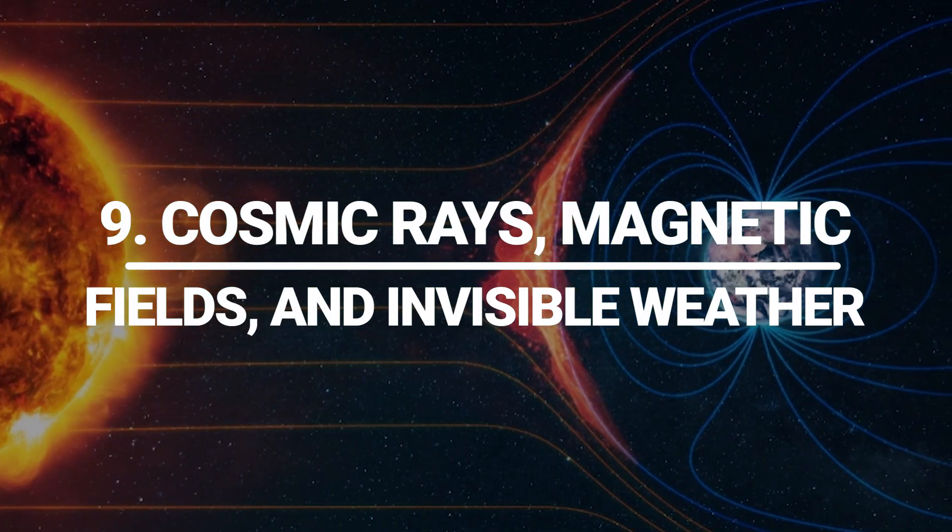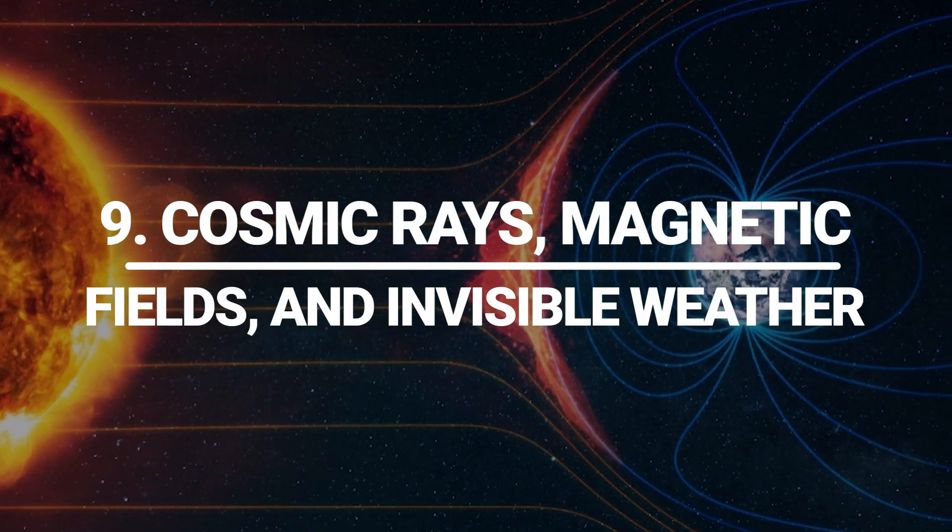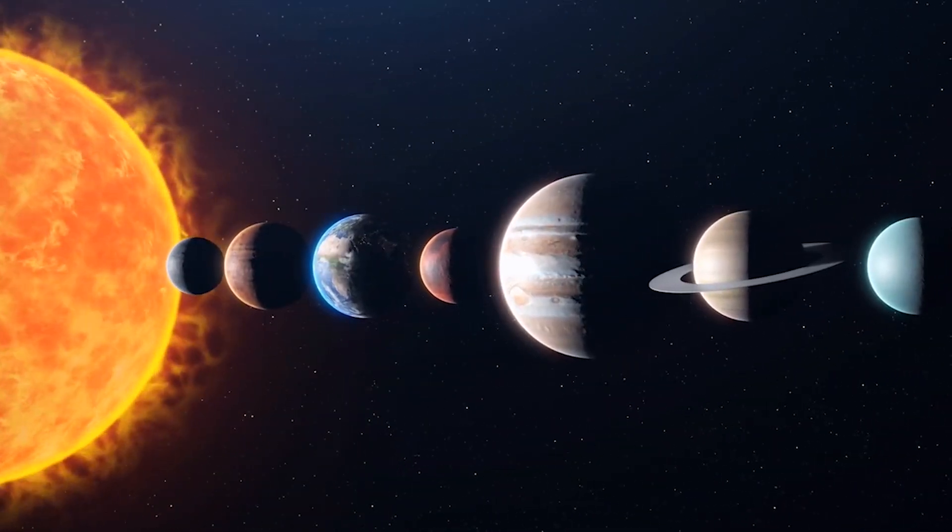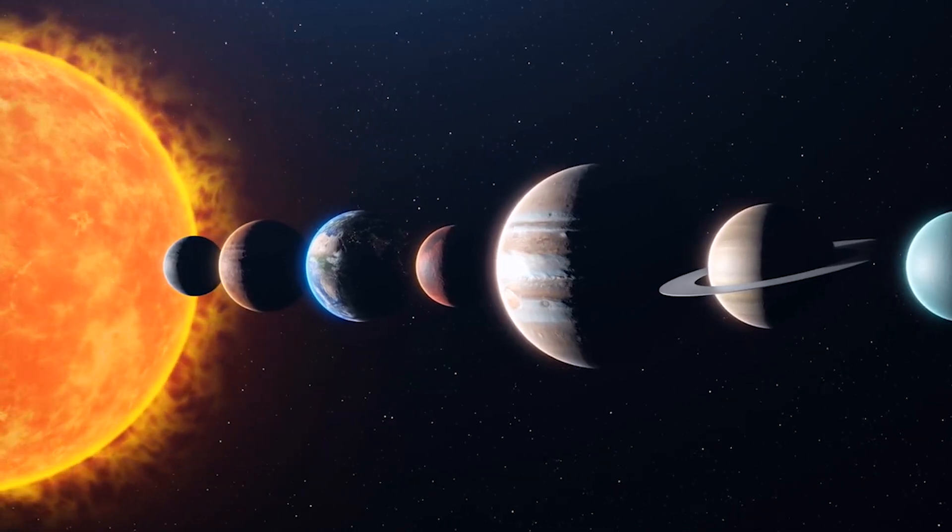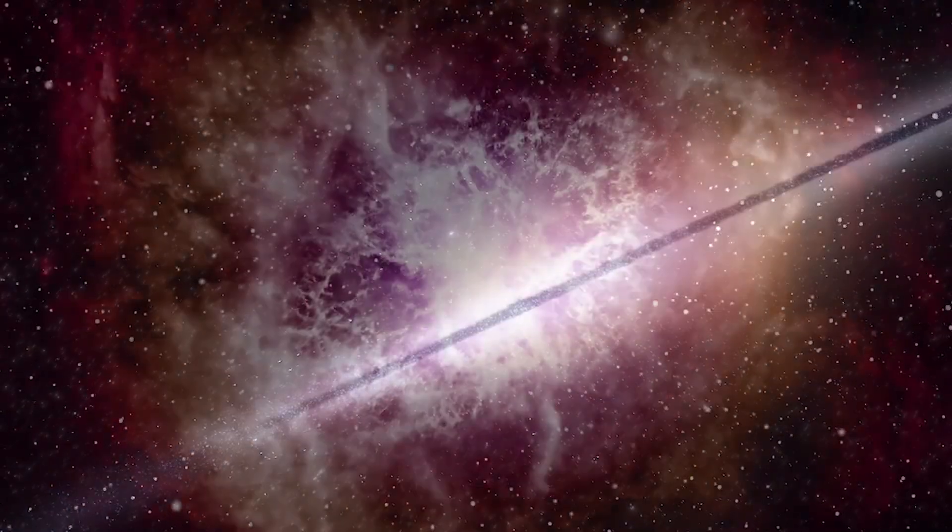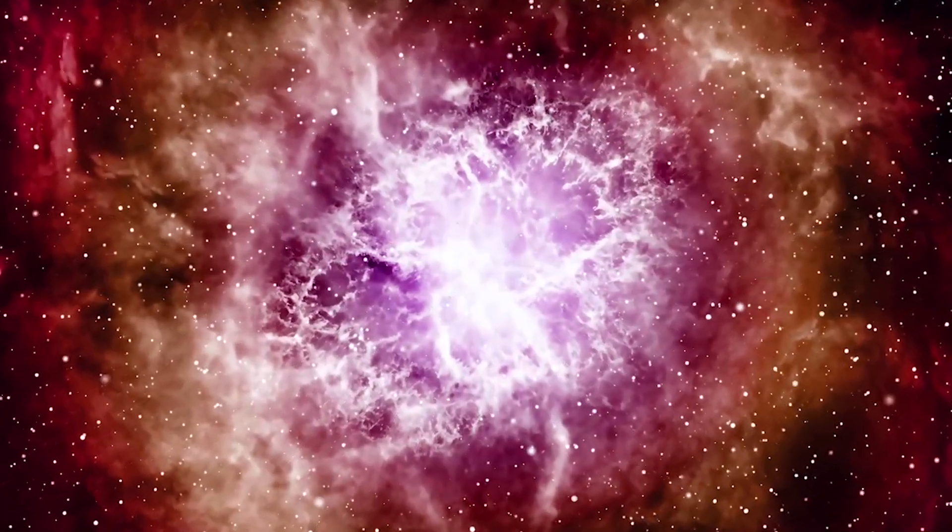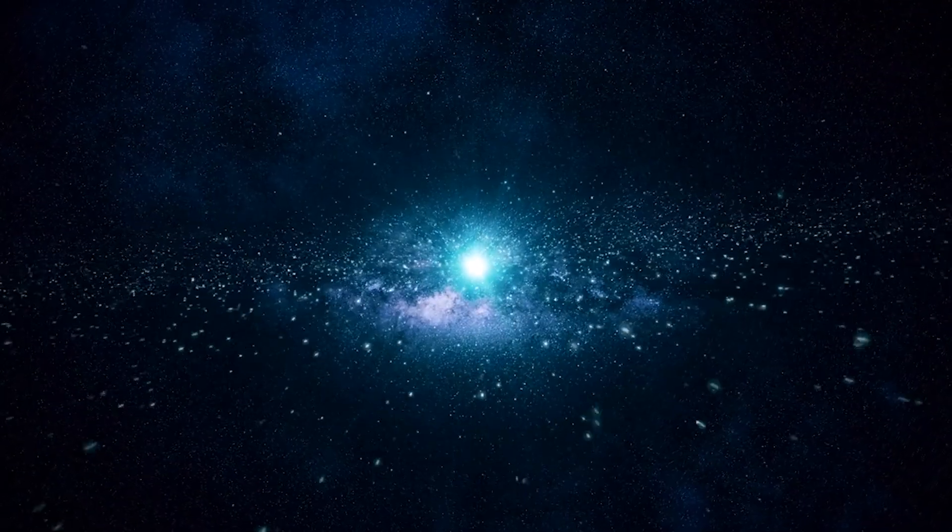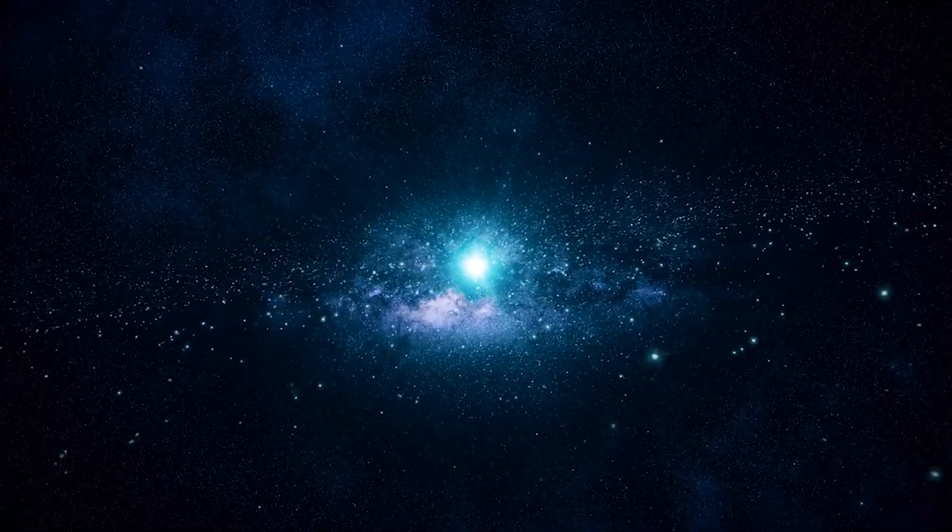Cosmic rays, magnetic fields, and invisible weather. Above and below the solar system, magnetic fields twist like braids of smoke. The Milky Way's large-scale field follows the spiral arms, but leakage into the halo creates vertical filaments thousands of light-years long. When supernova shockwaves slam into those filaments, they accelerate particles to near light speed, birthing cosmic rays that rain down on the heliosphere's roof.